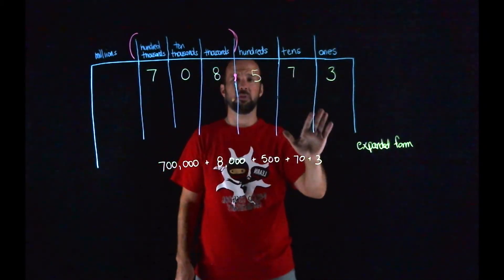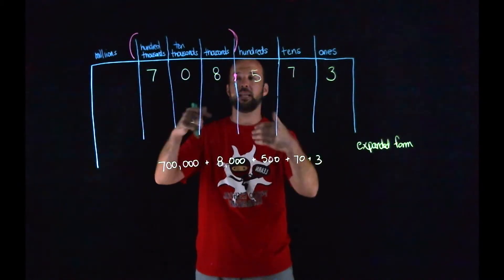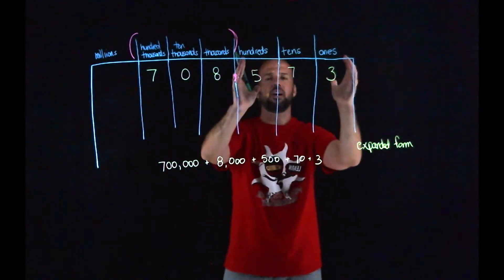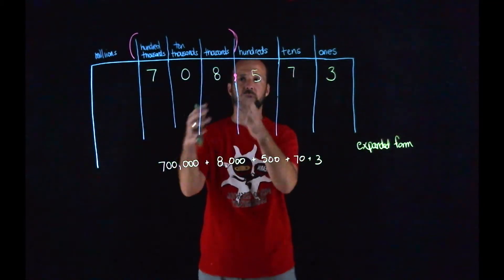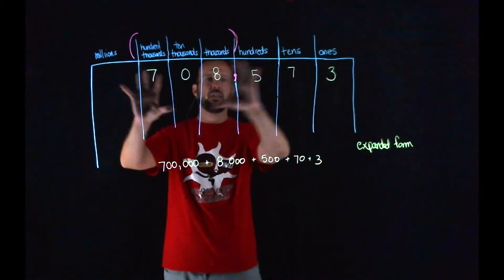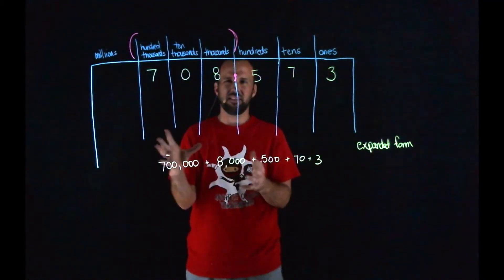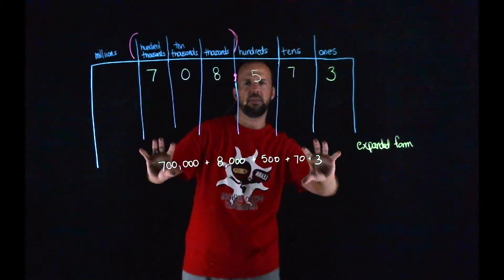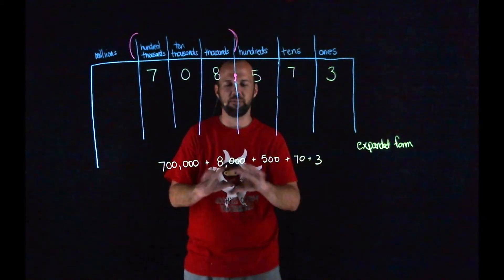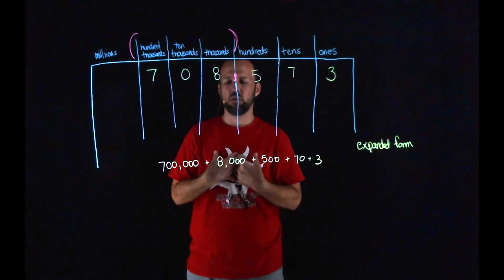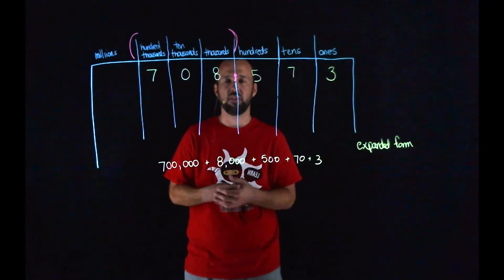Practice reading this — the only way you're going to get better at reading numbers is to read them aloud to somebody. If you need to get a neighbor, your learning guide, have your cat sit down, whatever it is, read them to somebody and practice that reading by period: 708,573. It's the only way you'll get better — through repetition, using those periods and commas to help you. Hopefully this is starting to make sense, how we can use a place value chart to write numbers in expanded form and say them in word form. We can think of these as alter egos of the numbers: standard form, expanded form, word form — all different ways to represent the same value. Have fun practicing, and reach out if you need anything. Thanks for watching.